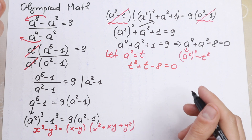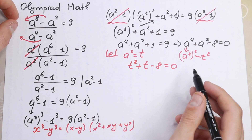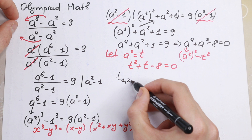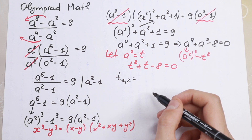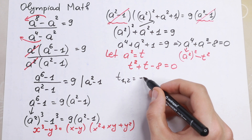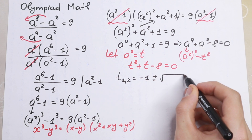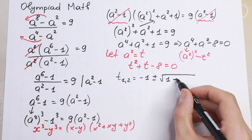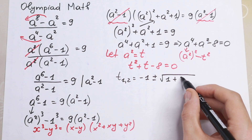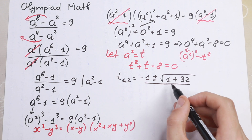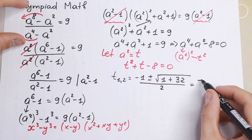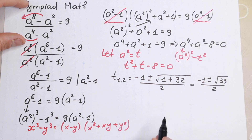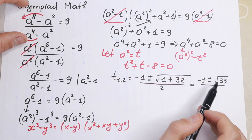How can we solve this? We need to find t₁ and t₂ using the classic quadratic formula (ABC method). Substituting: t = (-b ± √(b² - 4ac)) / 2a, with b = 1, a = 1, c = -8. We get t = (-1 ± √(1 + 32)) / 2, which simplifies to t = (-1 ± √33) / 2.